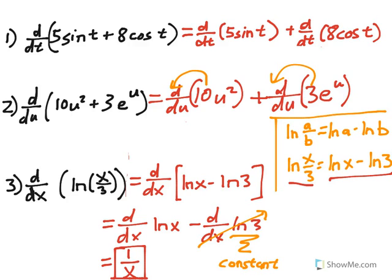It's a little surprising that the derivative of natural log of x over 3 is the same as the derivative of natural log of x. But as shown, the natural log of 3 is just a constant, and the derivative of a constant is always 0. Hope this was helpful.